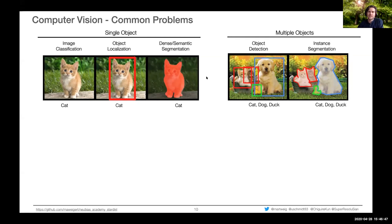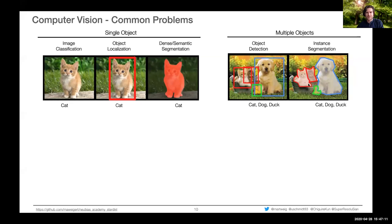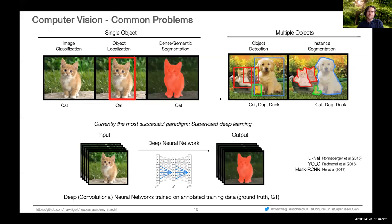For multiple objects, object detection finds all objects and places bounding boxes around them. Instance segmentation goes further — it not only finds all objects but delineates them precisely so you get each individual instance in a very precise way. These are the main paradigms in recent years for solving these kinds of tasks.